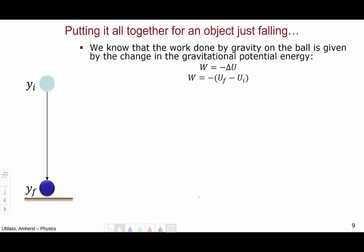Now, delta is always final minus initial, so work is minus the quantity u final minus u initial. Or distributing the minus sign, work is u initial minus u final. And this is the work done by the force of gravity on the falling object.